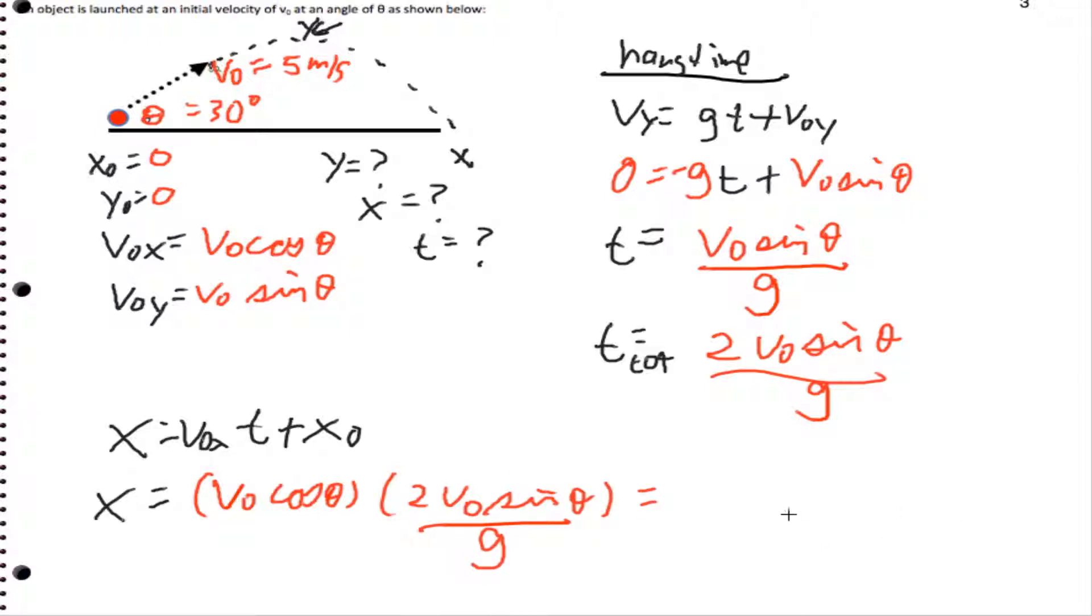Now what I'm going to do is I'm going to put all the stuff together and I'm going to use a little bit of trig to simplify. So it actually turns out that when I do simplify this, I'm going to get x equals v0 squared sine of 2 theta divided by g, using a little trig rule there.